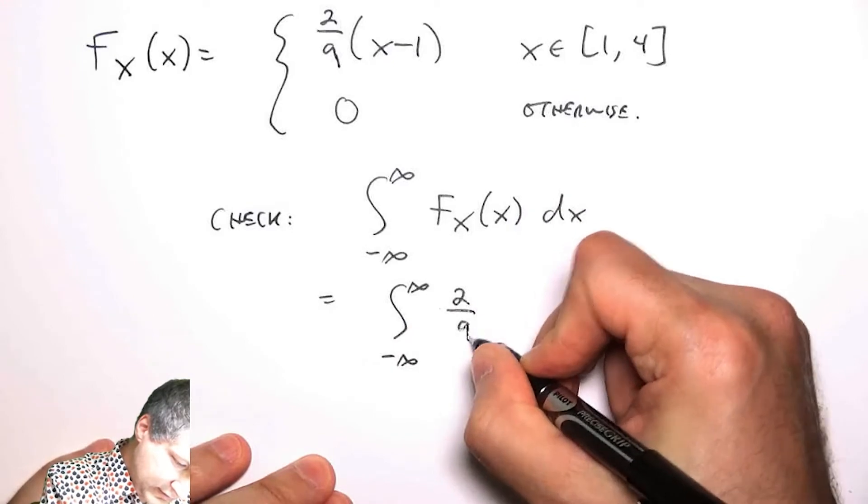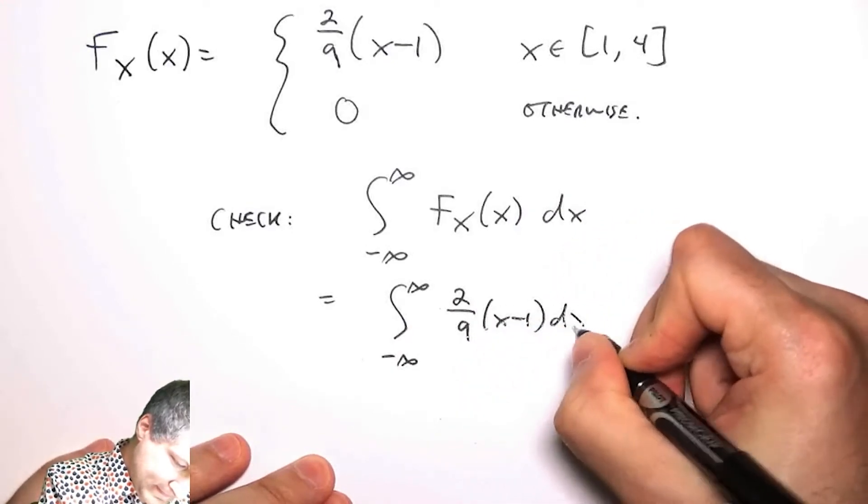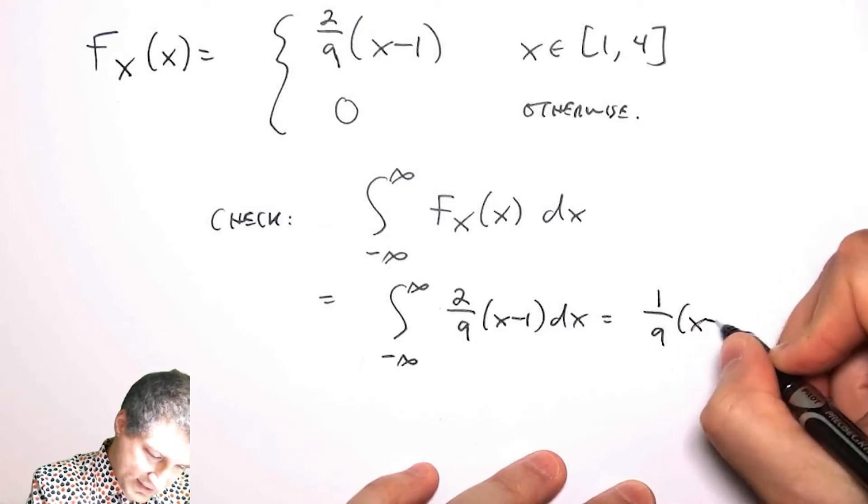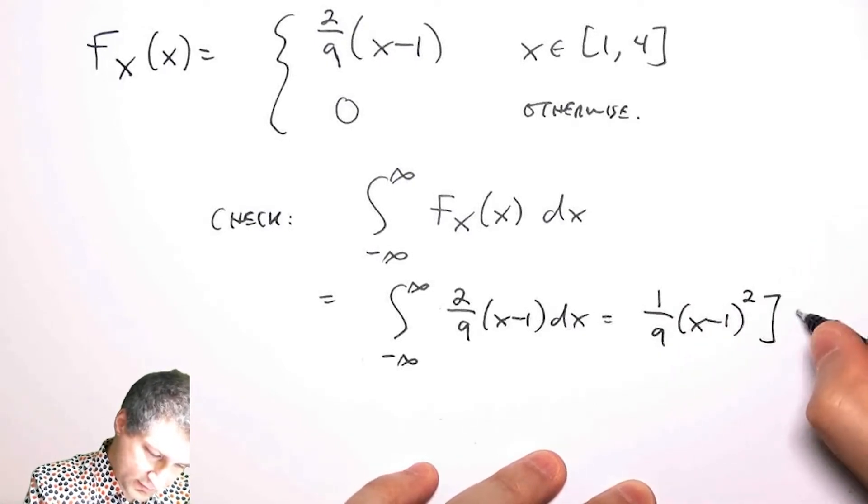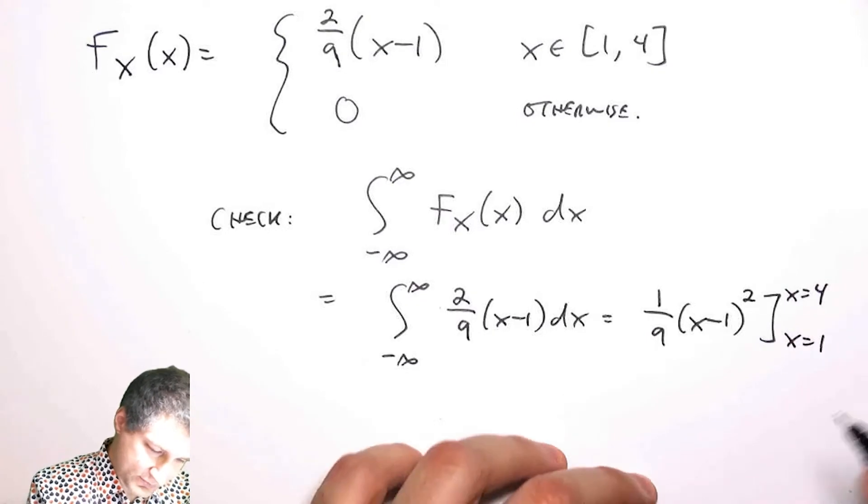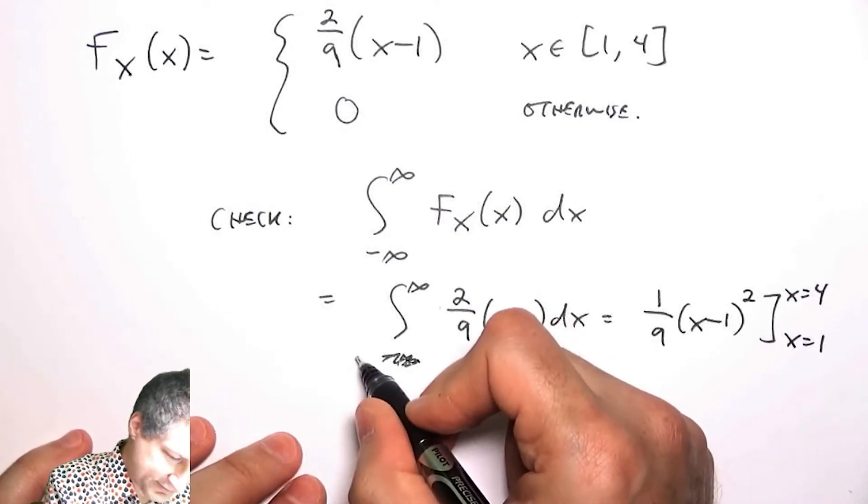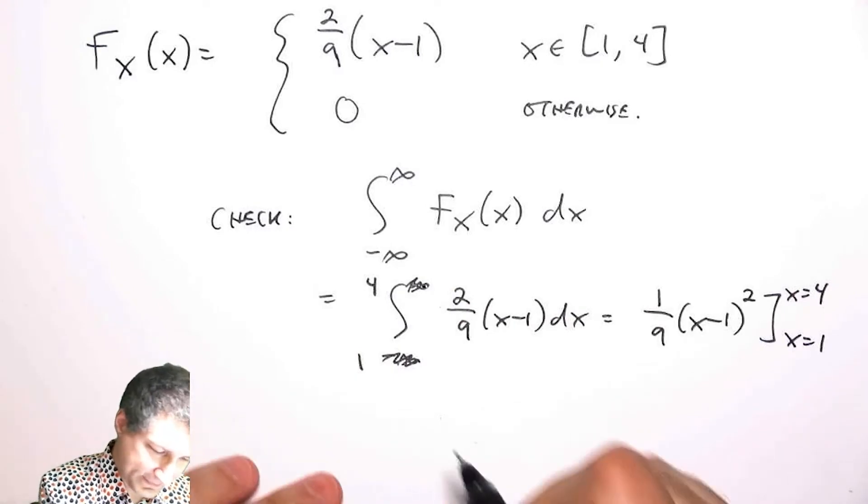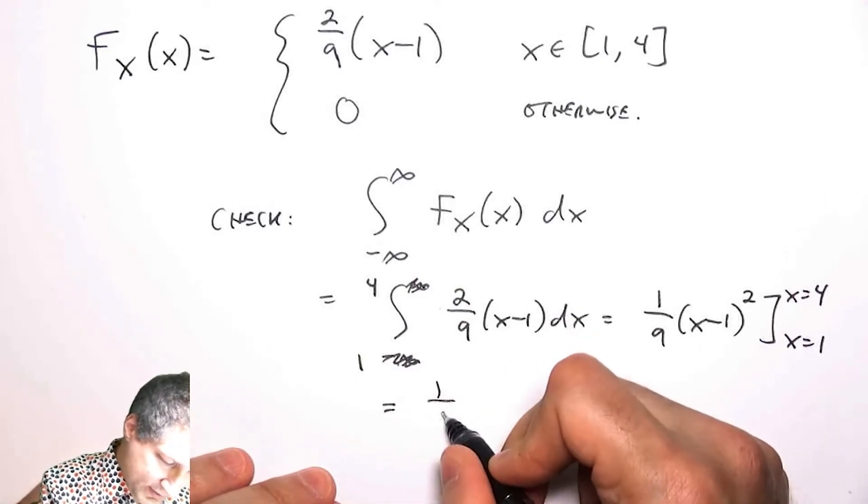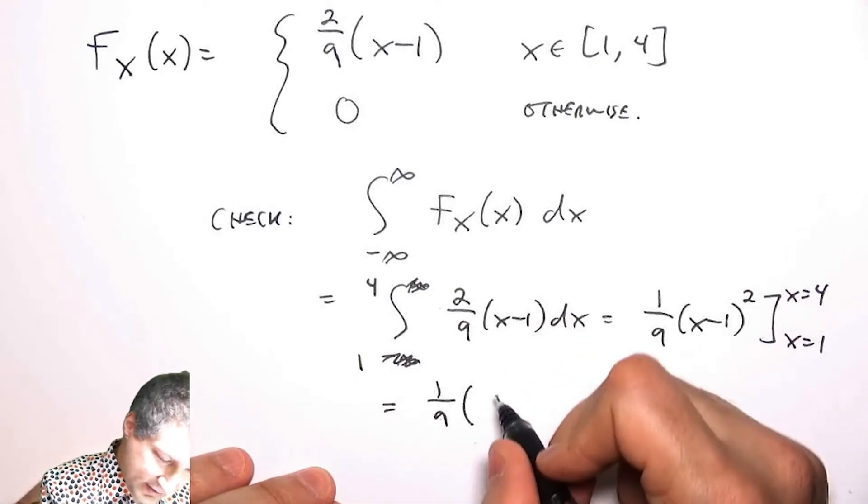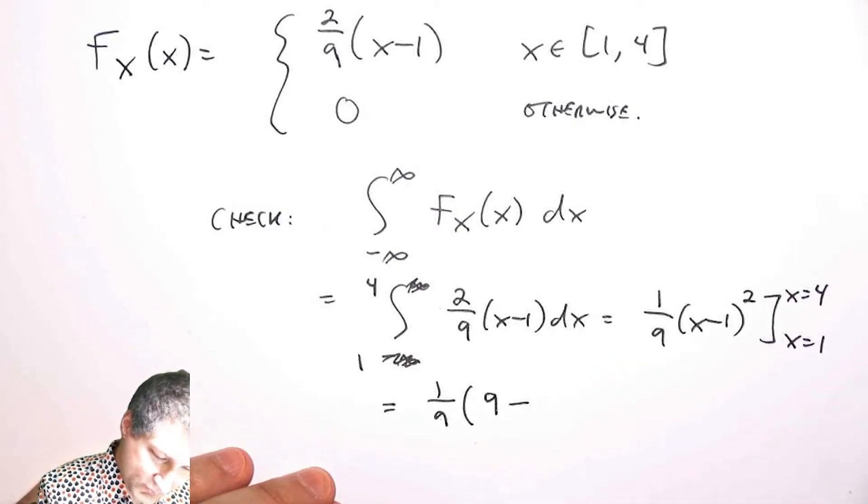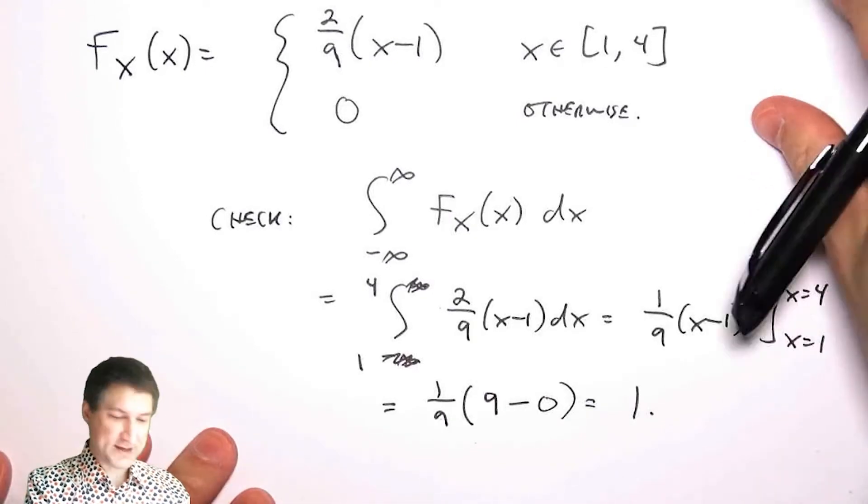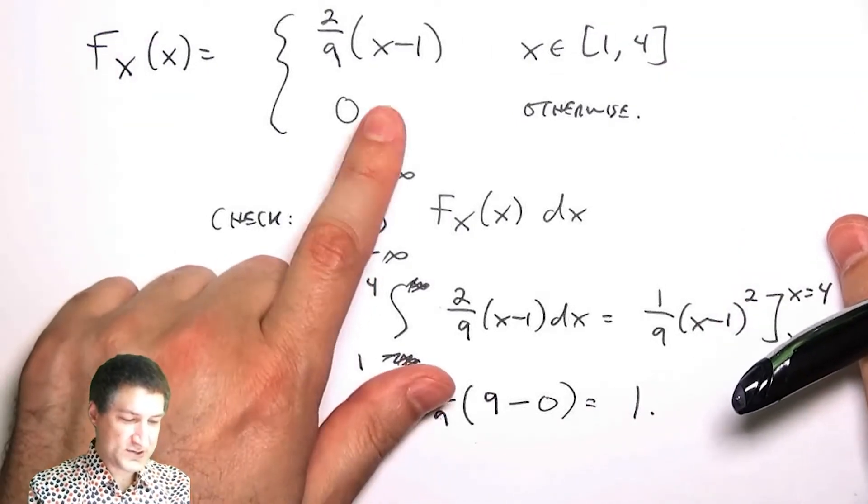I'm going to have 1/9(x-1)² evaluated from x equals 4 to x equals 1. I really should write these integrals like this because I know it's zero outside those boundaries. So I got 1/9 times (3)² is 9, minus (0)² is 0, so I get 1. Okay, so this is in fact a PDF.